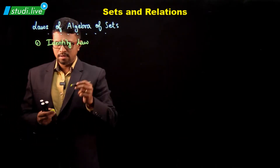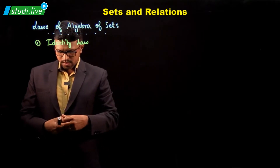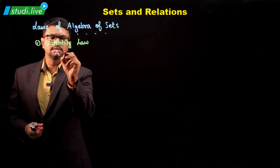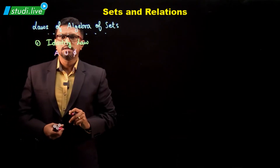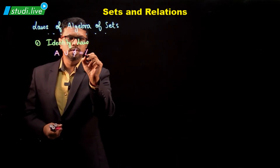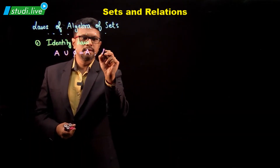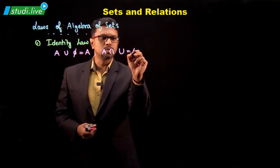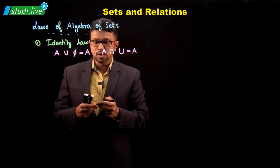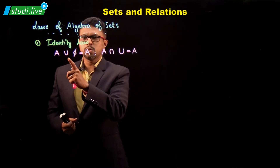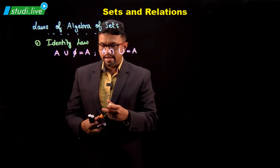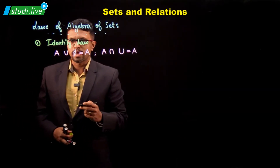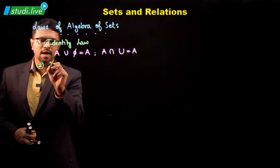What is satisfied in the identity law? We have laws like this: A union the empty set will be equal to A, and A intersection the universal set will also be equal to A. So this is what is included in the identity law — A union with the empty set is the set itself, and A intersection with the universal set is also A.